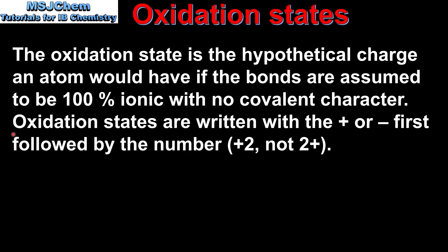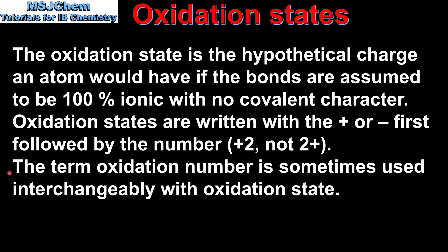Oxidation states are written with a plus or minus first, followed by the number — for example, plus 2, not 2+. The term oxidation number is sometimes used interchangeably with oxidation state. Although they mean slightly different things, they can be used interchangeably.